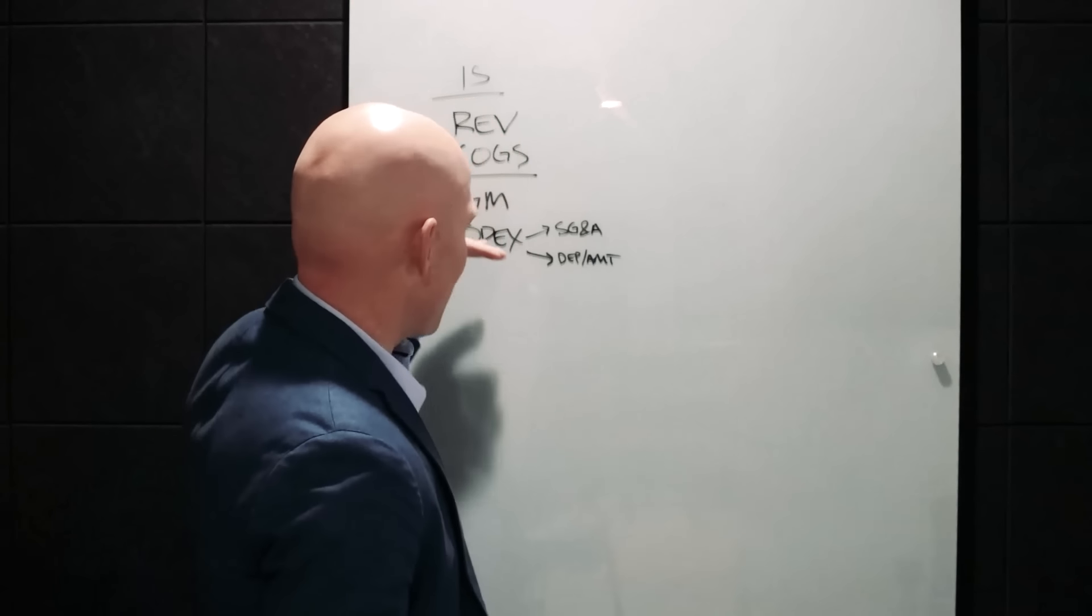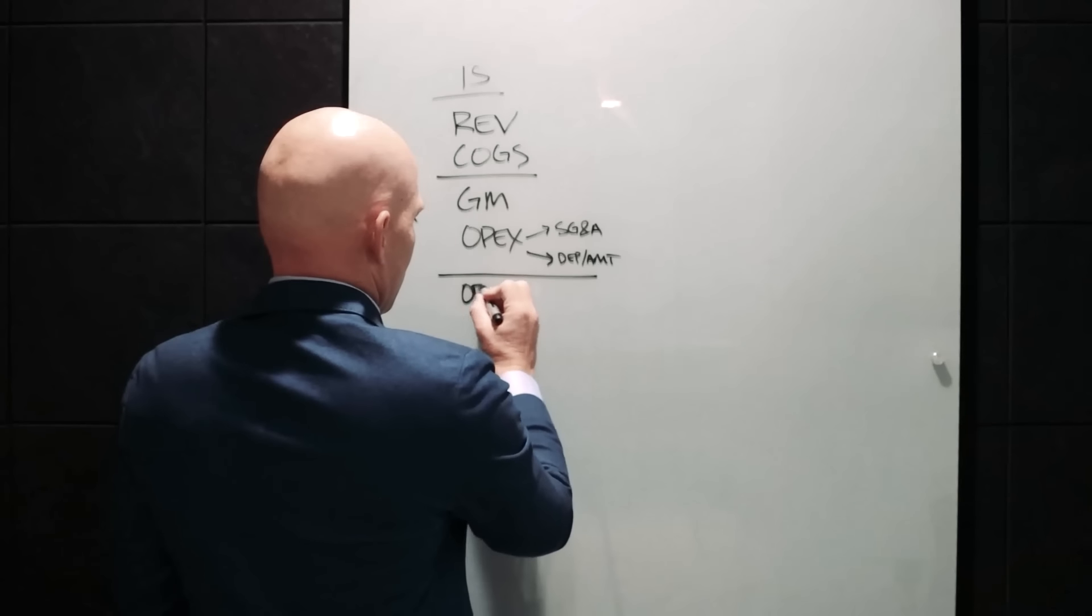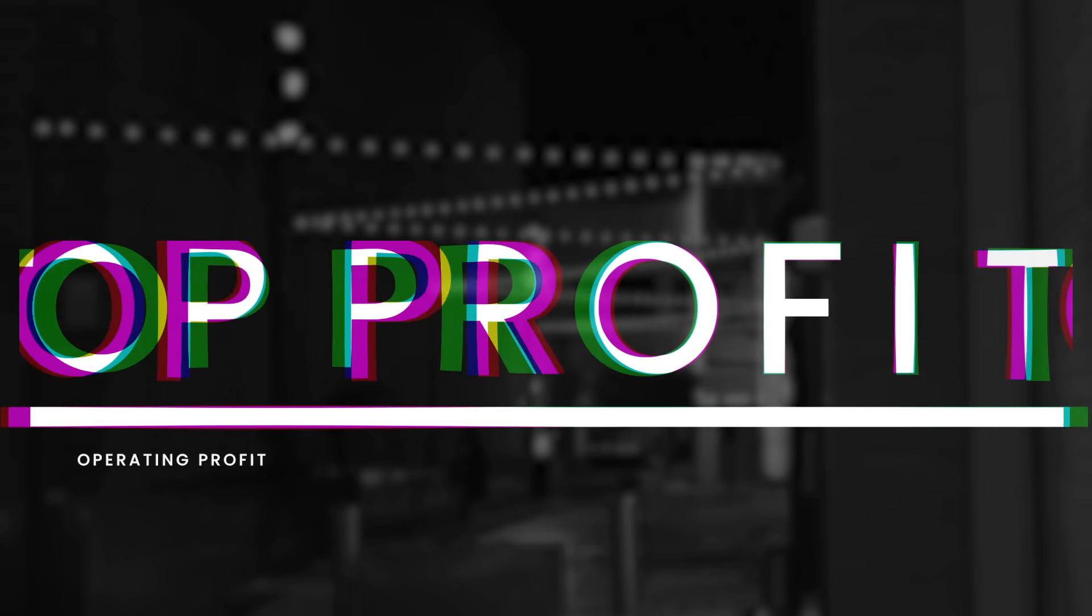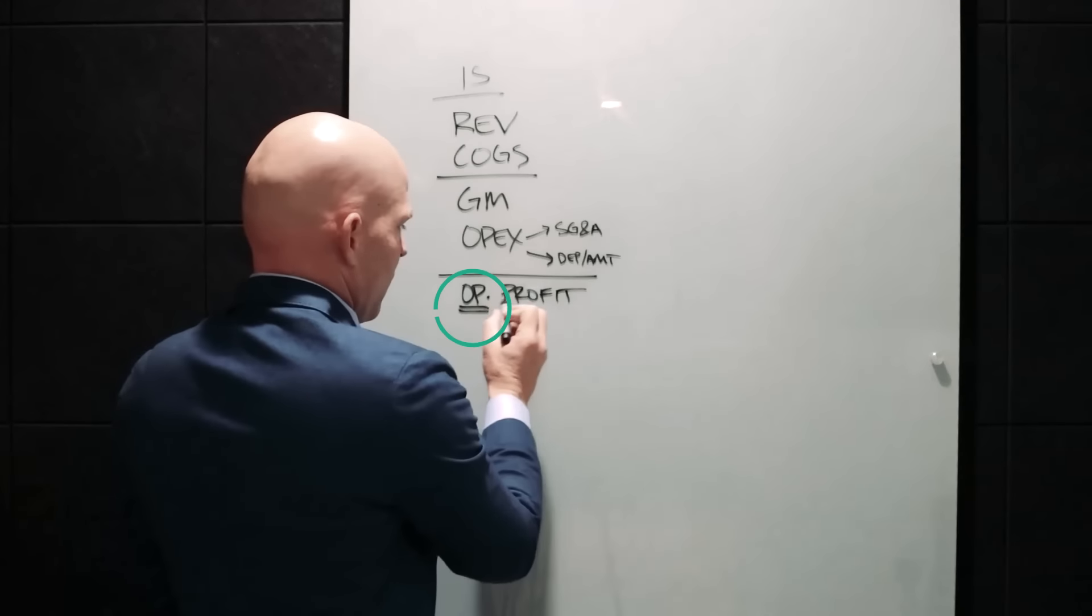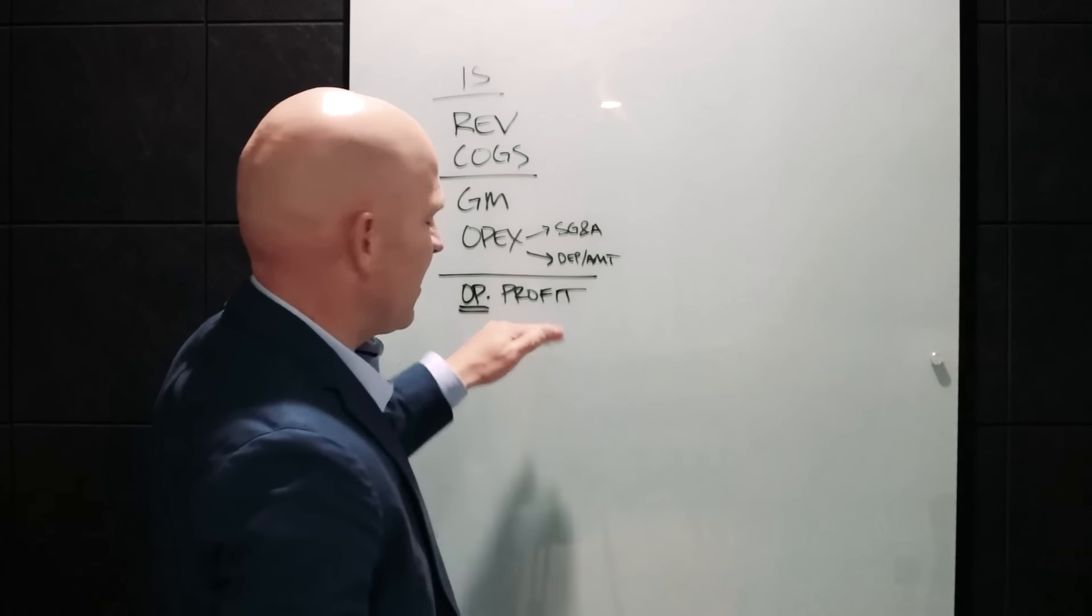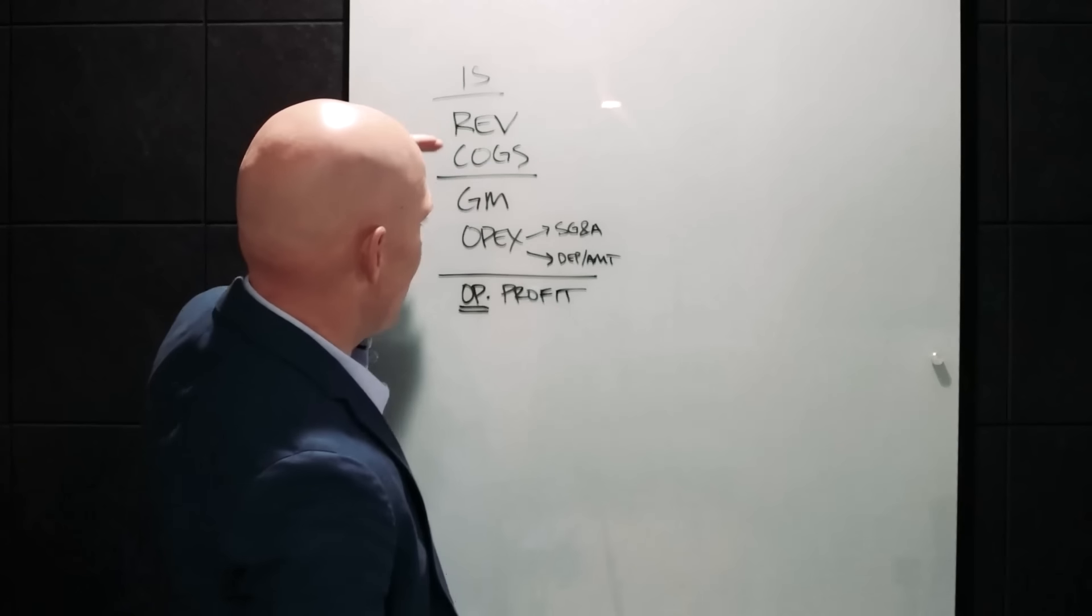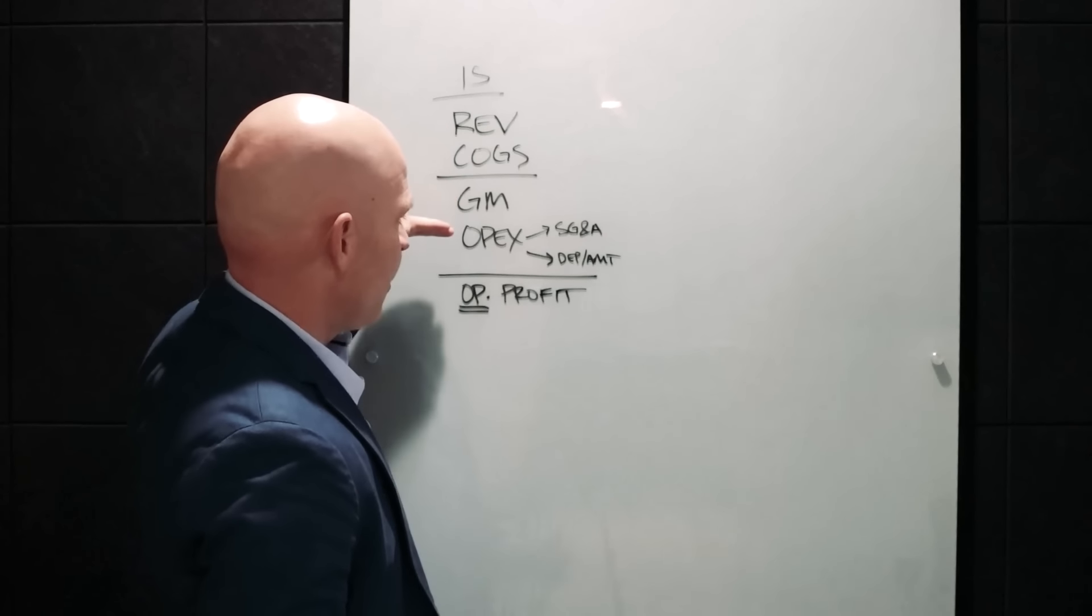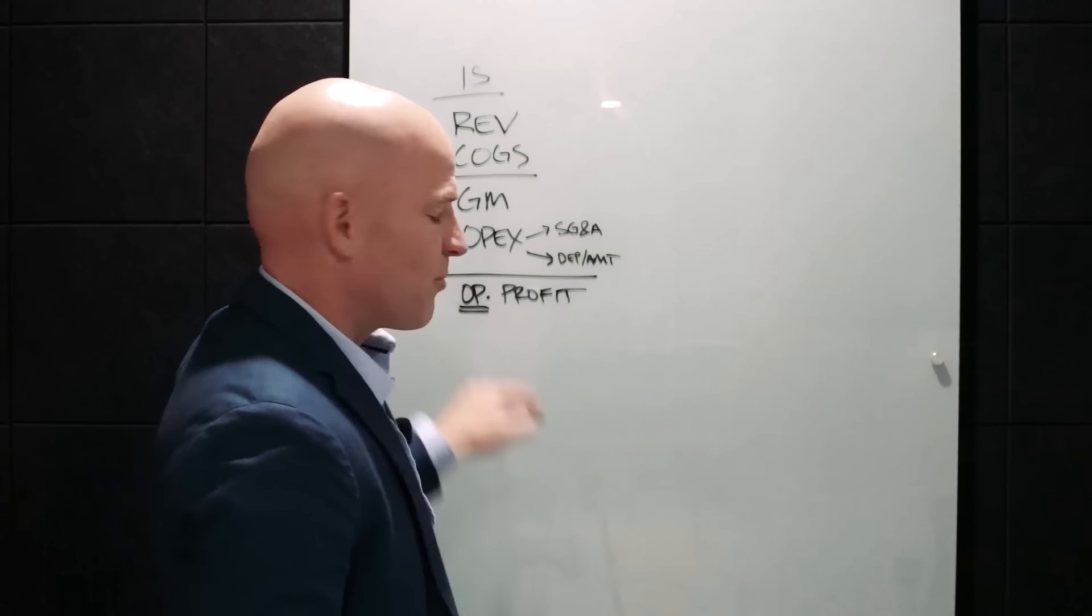So that's OPEX, operating expenses, and underneath OPEX, we arrive at operating profit. The keyword here is operating, because we want to measure profit that is generated through the normal operations of the business. So we take revenue minus cost of goods sold, we end up with gross margin, we account for OPEX, and we arrive at operating profit.